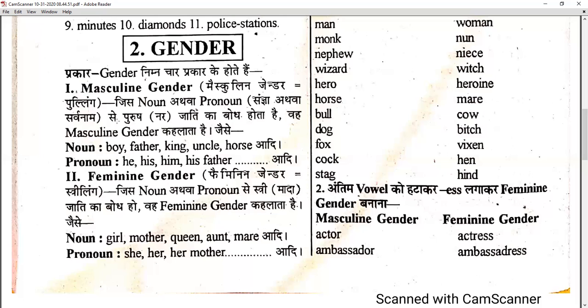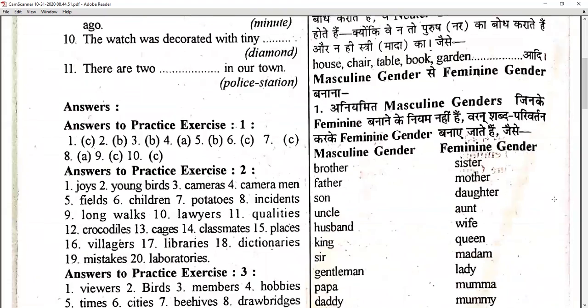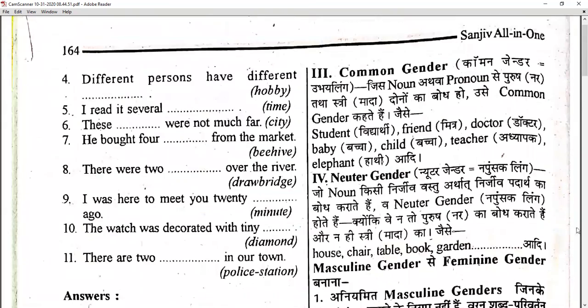So masculine basically refers to the male category and feminine refers to the female category. Then the third gender is common gender. Common gender is common to both male as well as female. Words which refer to both, like for example, student — student can be girls and boys — so student is a common gender. Friend — a friend can be a boy as well as a girl — so friend is also a common gender.